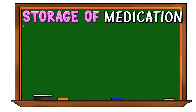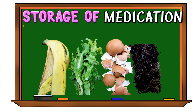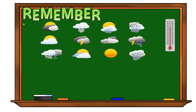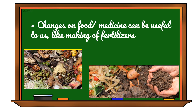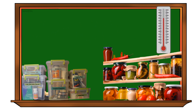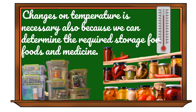Even though changes in food and medicine happen, they can still be beneficial to us. We can use spoiled food in our backyard as fertilizer, and drop off unused medicine at a drug take-back site or program to avoid environmental contamination and hazard effects. Remember the following: temperature is one of the factors that affect food and medicine; changes in food or medicine can be useful, like making fertilizers; and changes in temperature help us determine the required storage for foods and medicine.